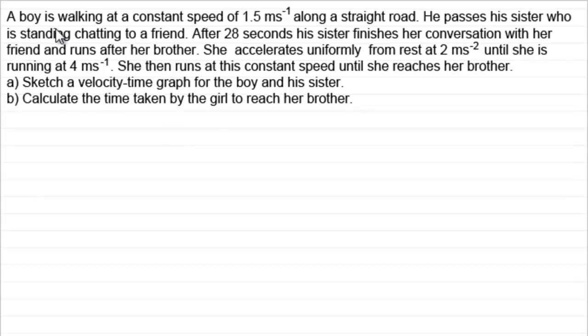Basically what we've got is a boy walking at a constant speed of 1.5 meters per second along a straight road. He passes his sister who is standing chatting to a friend. After 28 seconds his sister finishes her conversation with a friend and runs after her brother. She accelerates uniformly from rest at 2 meters per second squared until she is running at 4 meters per second. She then runs at this constant speed until she reaches her brother.